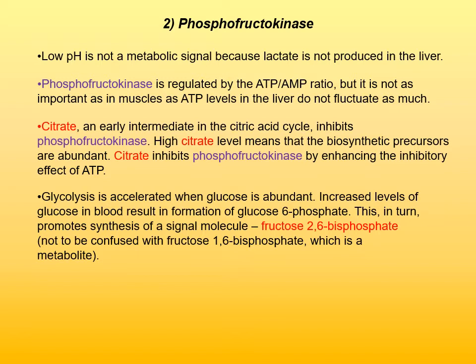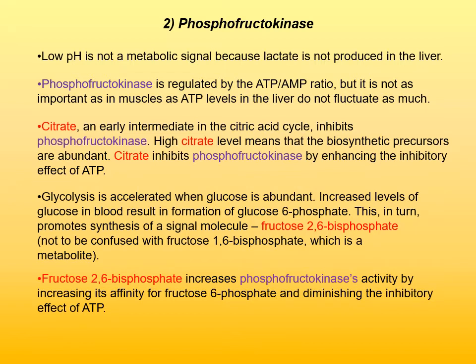Do not confuse fructose-2,6-bisphosphate, which is a signal molecule produced in very small amounts, with fructose-1,6-bisphosphate, which is a key metabolite in glycolysis. Fructose-2,6-bisphosphate increases phosphofructokinase activity by enhancing its affinity for fructose-6-phosphate and diminishing the inhibitory effect of ATP. That is also another example of feedforward stimulation: when glucose-6-phosphate is abundant, feedforward stimulation occurs to stimulate glycolysis in the liver.